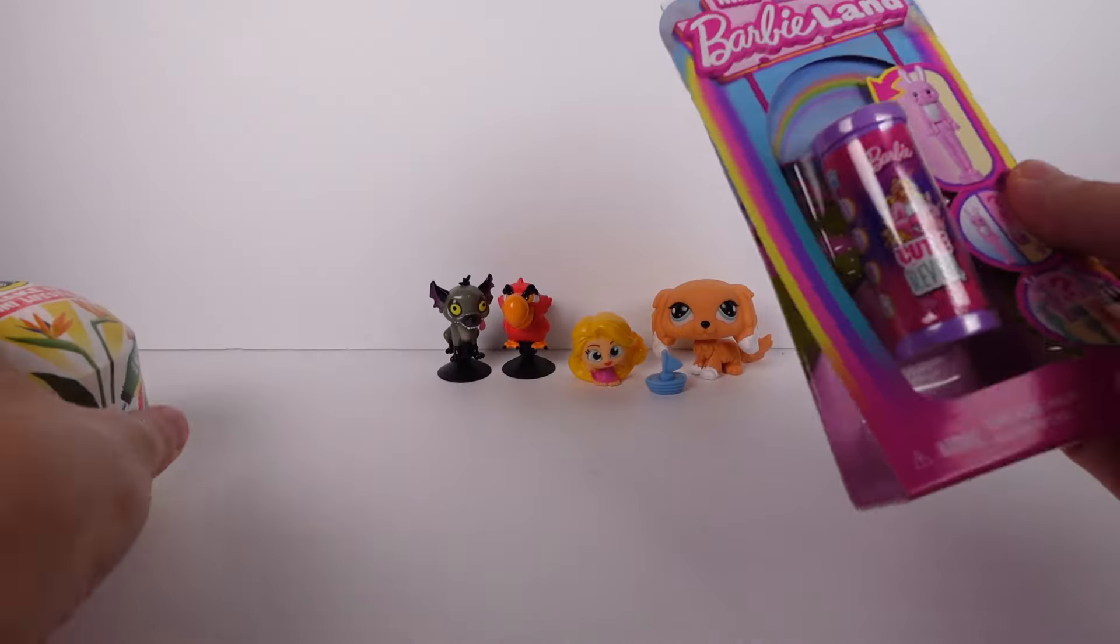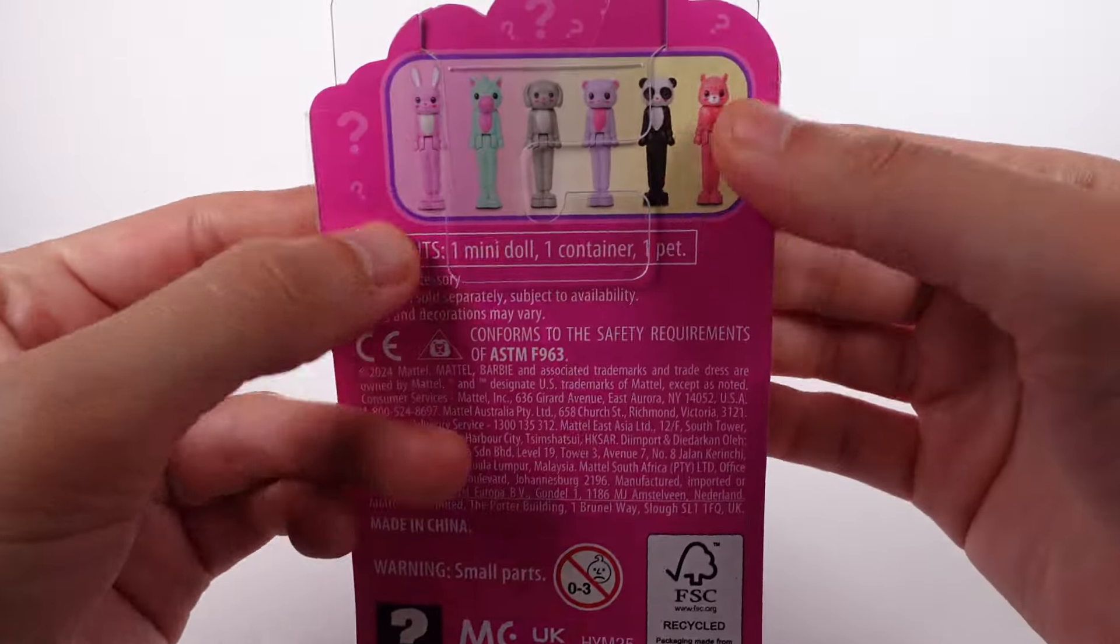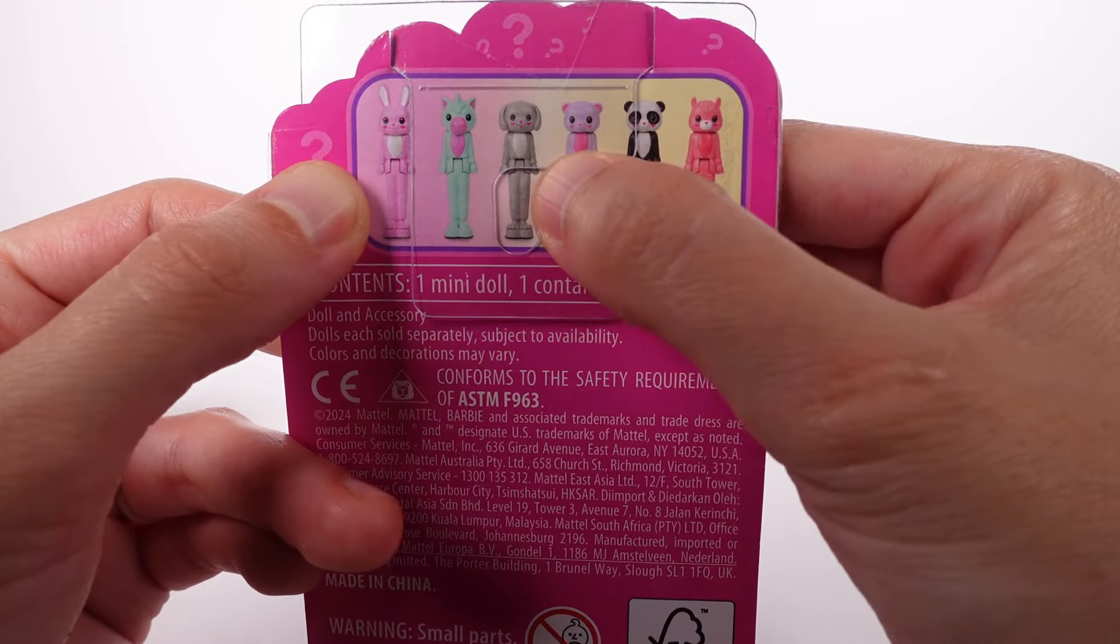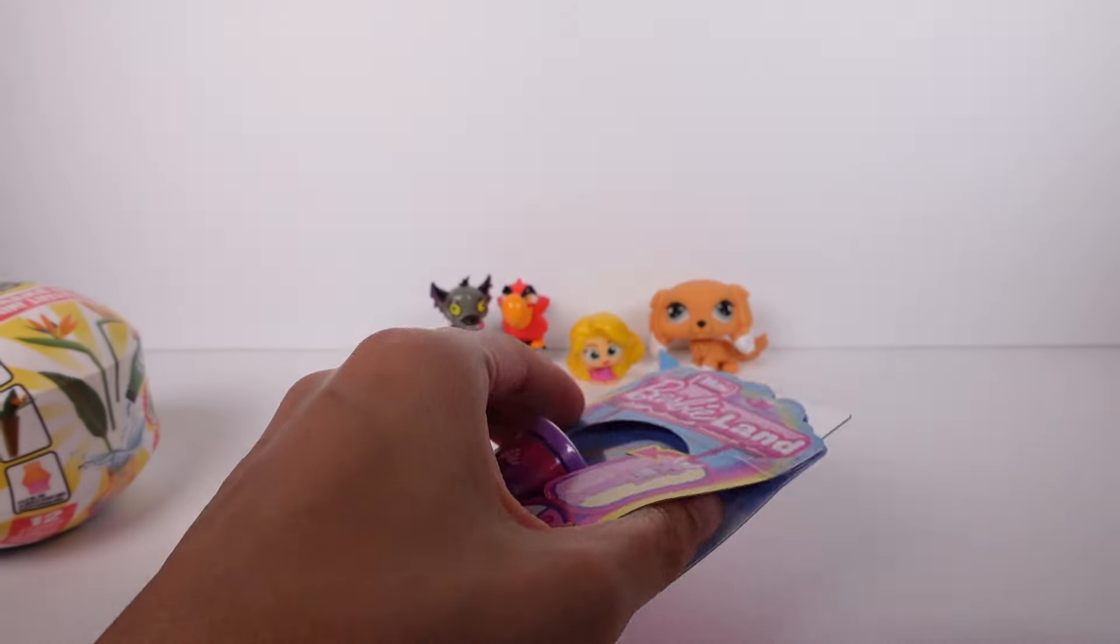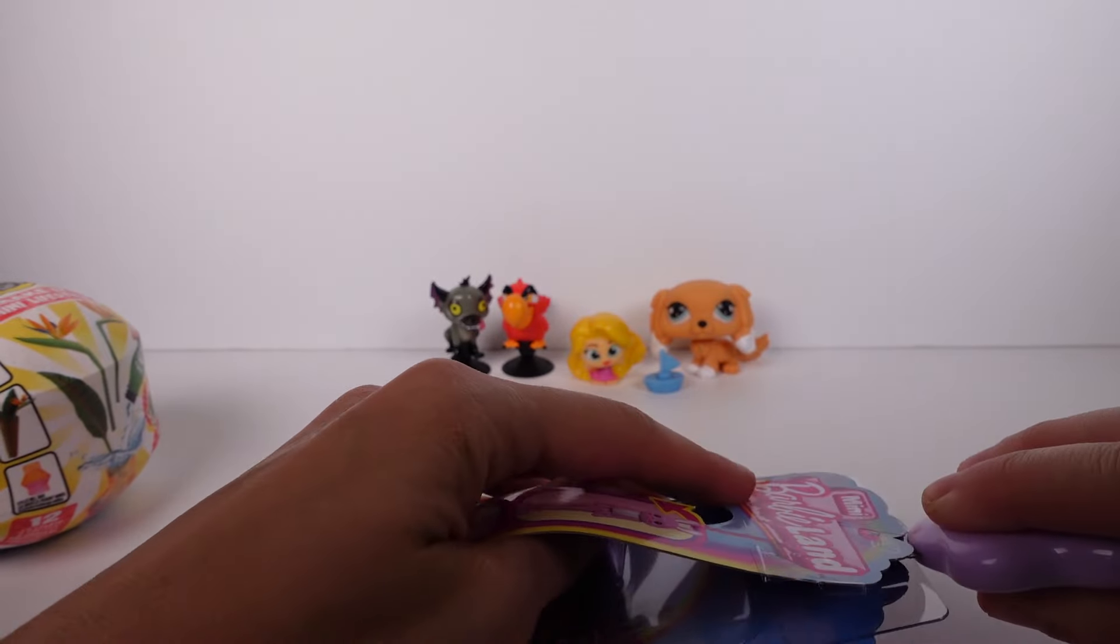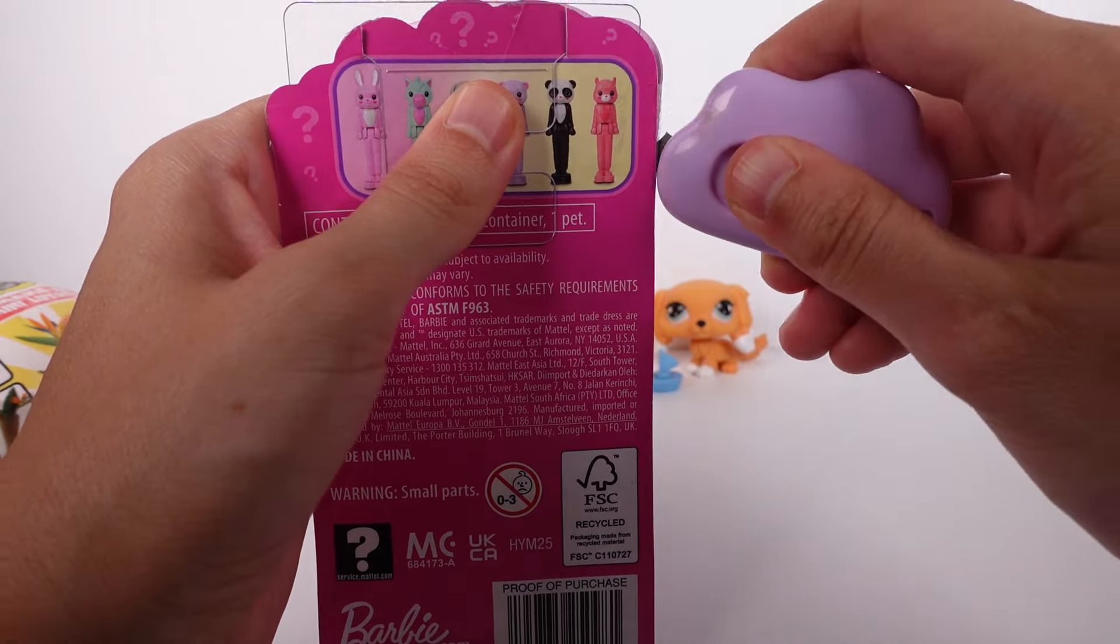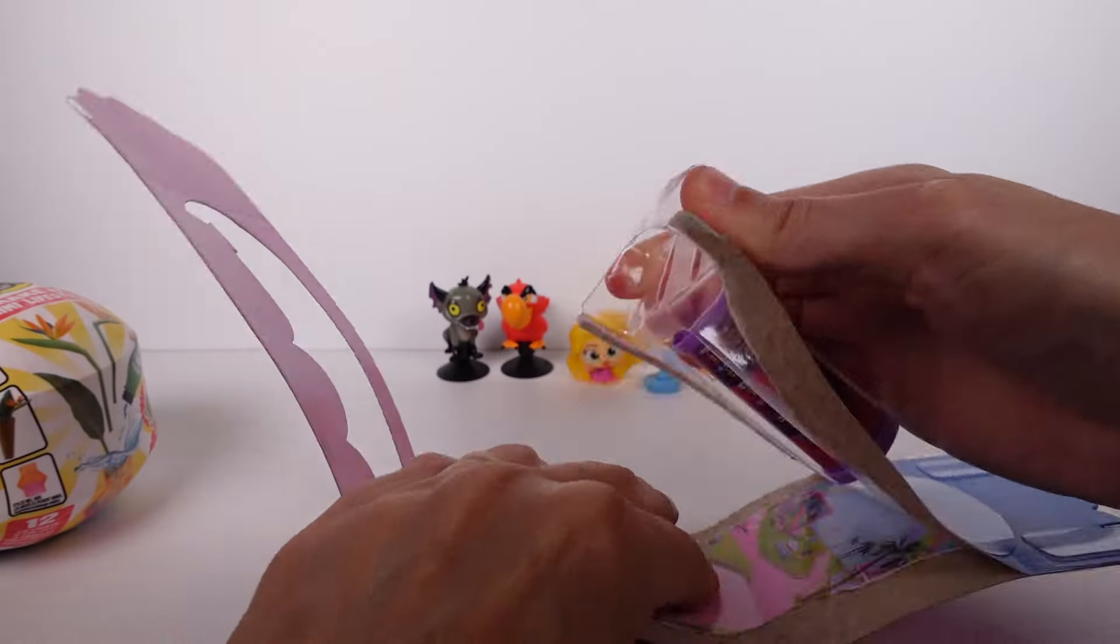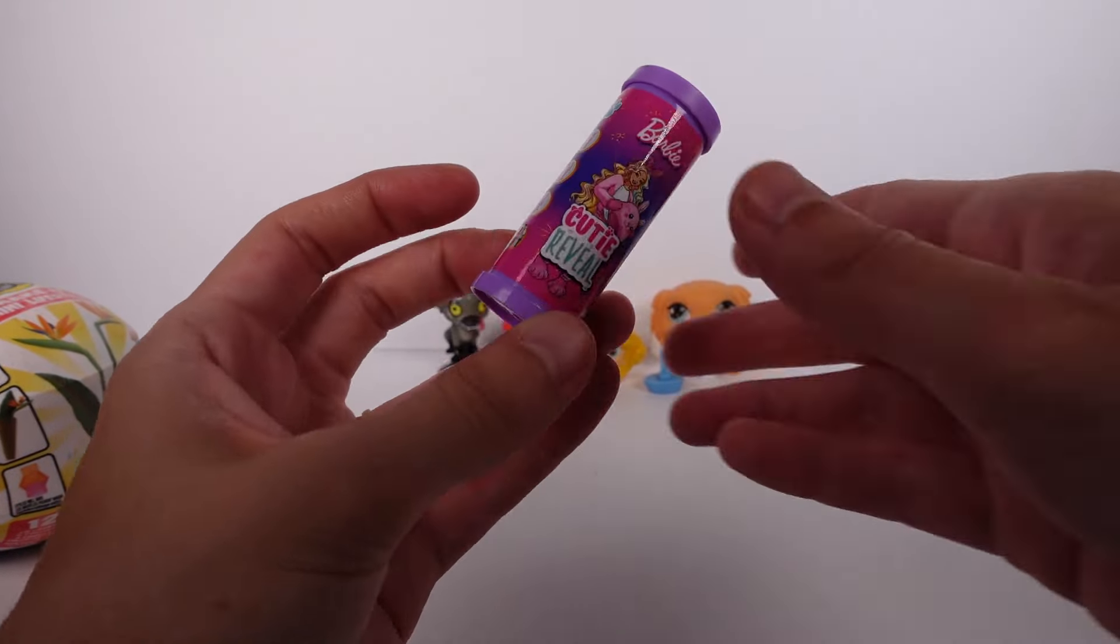So these are our two remaining items. I think we'll go for the Barbie first. This is the Cutie Reveal. These are the ones up here that we could possibly find. I kind of really want to get the panda or the bunny. All right, let's see. I'm gonna use my little knife here to get this open. There we go. And then let's see, I should be able to pop it out over here. Yes, perfect.